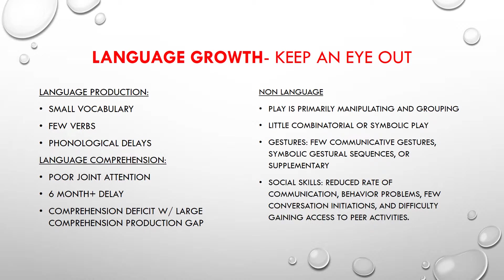When looking for language delays in young children, keep an eye out for the following. Within language production, you will see smaller vocabulary, fewer verbs, and phonological delays. For language comprehension, you'll see poor joint attention, more than a six-month delay in comprehension from their chronological age, and a comprehension deficit with a large comprehension-production gap.